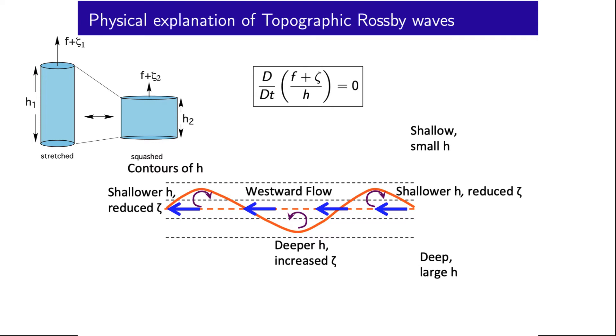Which in the northern hemisphere where f is positive means a reduction in the relative vorticity ζ. Conversely, perturbations towards deeper waters increases H and needs an increase in the absolute vorticity to conserve potential vorticity, which again for the northern hemisphere requires an increase in the relative vorticity ζ. As with the planetary Rossby waves, the net effect along the original stream path on a contour of H is a flow which for the northern hemisphere has deeper waters on its left.